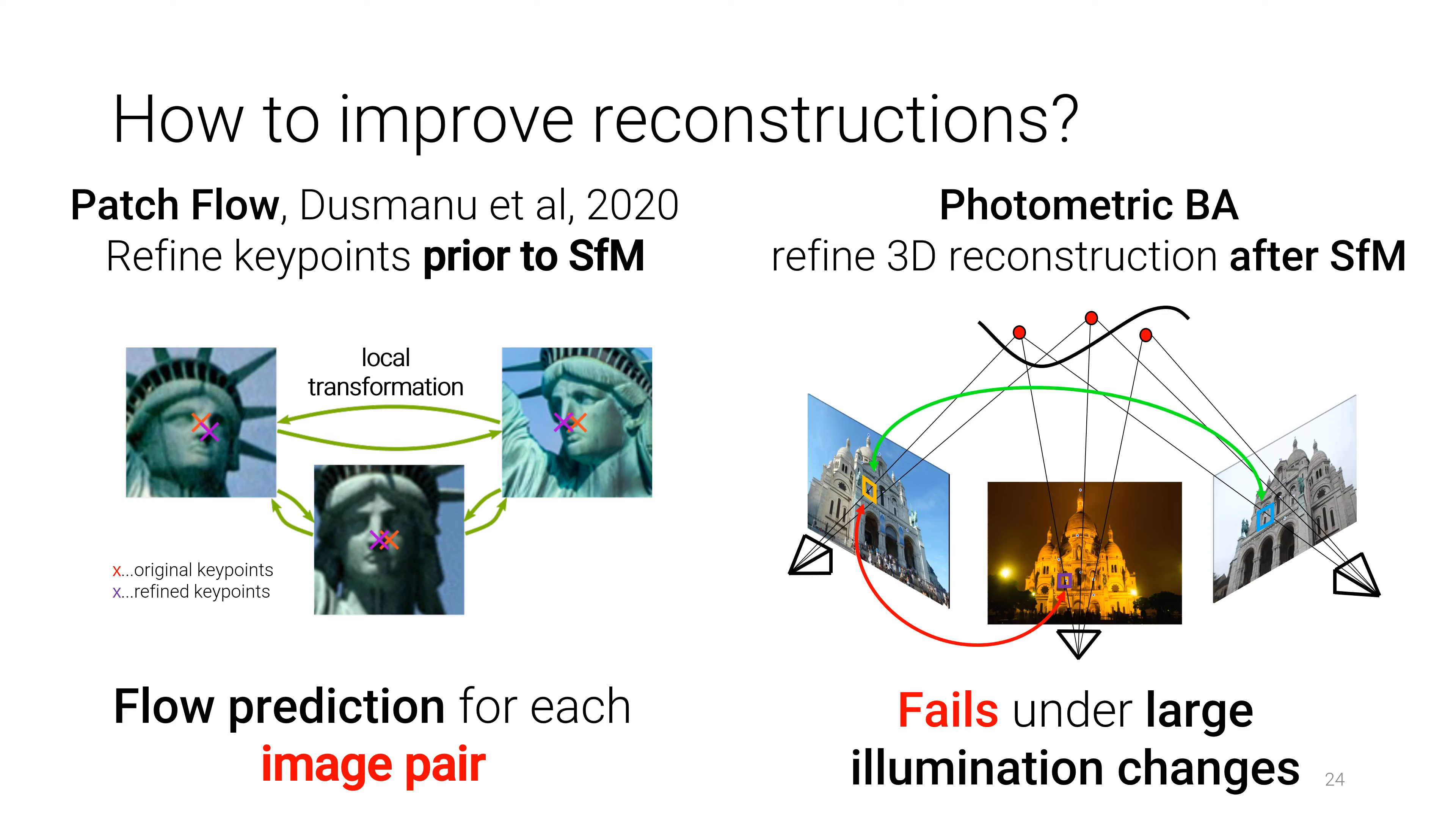Photometric bundle adjustment uses appearance information to refine the 3D model after SFM by minimizing the appearance difference of local patches, but fails under large illumination changes, such as day-night images.